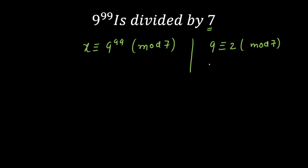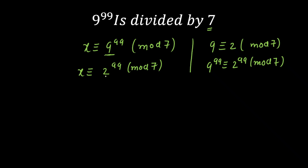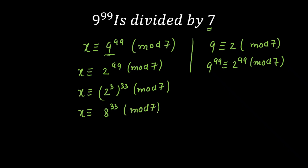If you want the power 99, you can use property 5, which I discussed in lecture 1: 9 raised to the power 99 is congruent to 2 raised to the power 99, modulo 7. You can check the base and divide the base by 7, so you'll get x is congruent to 2 raised to the power 99, modulo 7. Now there is a problem, because the base is 2, which is less than 7, so I cannot divide this by 7. I can make the base greater than 7 by writing this as 2 raised to the power 3, whole raised to the power 33, mod 7. Opening this, I get x is congruent to 8 raised to the power 33, mod 7. Since 8 is greater than 7, I can divide it and write the remainder: x is congruent to 1 raised to the power 33, mod 7. The final answer is x is congruent to 1, mod 7.